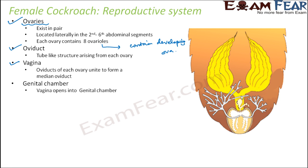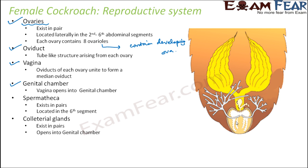The vagina opens into the genital chamber. In the genital chamber, you have the spermathecae, which exist in pairs and are located in the sixth segment. The spermathecae receive the sperms from the male cockroach. You also have colateral glands, which exist in pairs and open into the genital chamber — these are accessory reproductive glands.